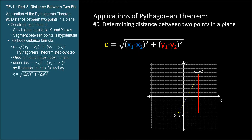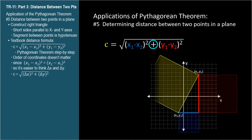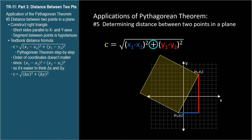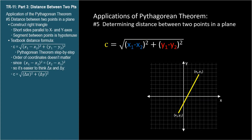x1 minus x2 is the length of blue. y1 minus y2 is the length of red. We square these terms, both in the equation and on the graph, then add them together to get the area of yellow, and take the square root to get the length of yellow — the distance between the two given points.